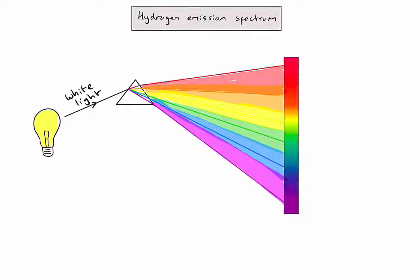We're focusing here just on the visible part of the spectrum, because that's the part we can see with our eyes. This spectrum is considered a continuous spectrum because it shows all of the frequencies of light in the visible part of the spectrum.